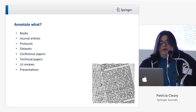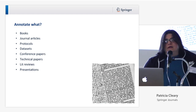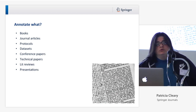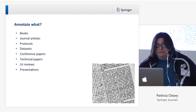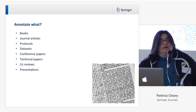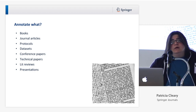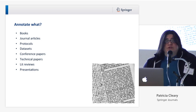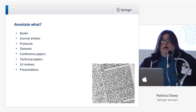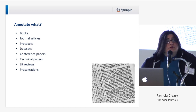We may want to ask: what are we annotating these days in science? We're annotating books, e-books, journal articles, scientific protocols, data sets, conference papers, technical papers, literature reviews, presentations — any form of digital content can be annotated. Since the internet went live, we've been annotating. You tag a Facebook picture, you leave a comment on a blog, Rap Genius — people don't even know that they're doing annotations.